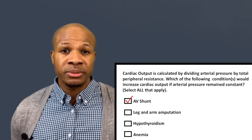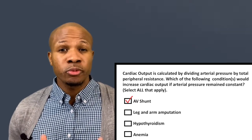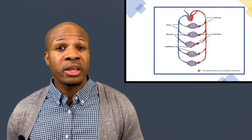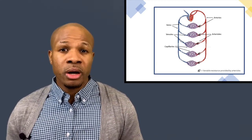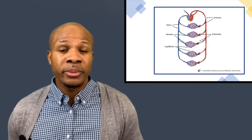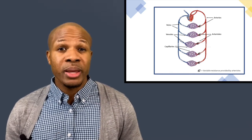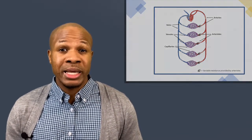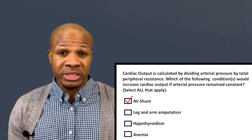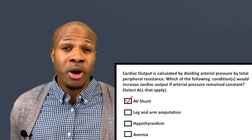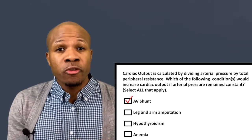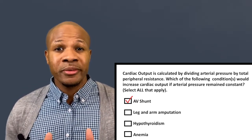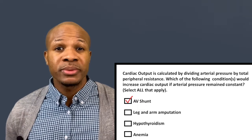Answer choice B says leg and arm amputation. In every part of the body, arteries flow into arterioles, through capillaries, and then into veins. If you cut off a limb, you've removed a portion of the body that allowed blood to flow from the arteries into the veins — this causes resistance to go up, which lowers cardiac output. So this is not a correct answer.